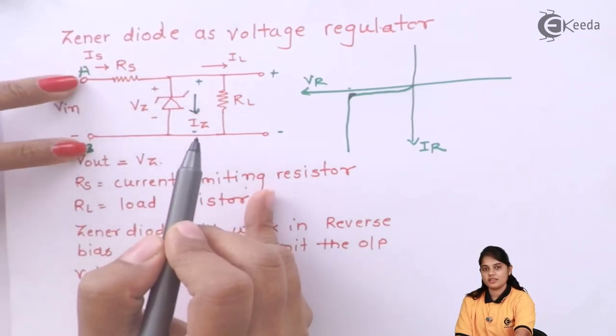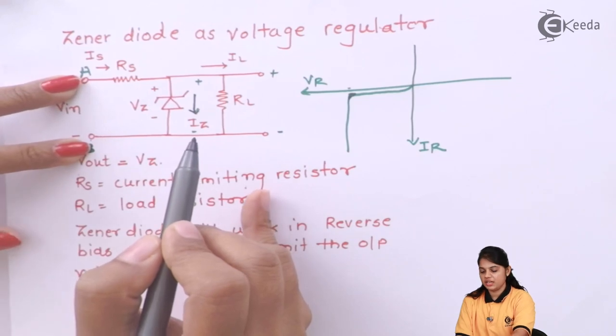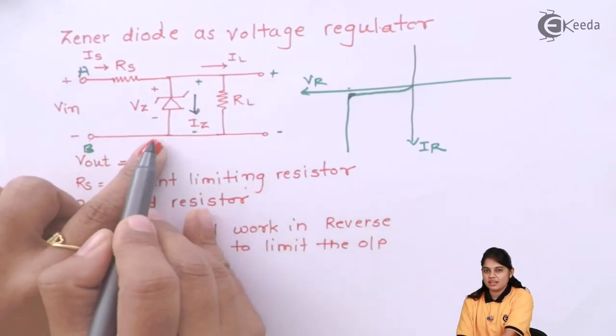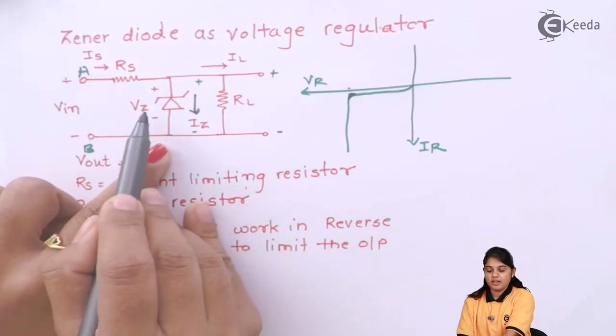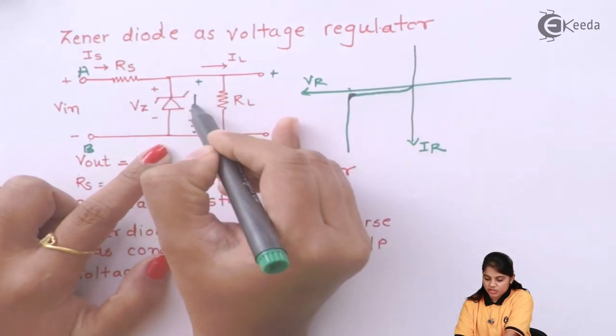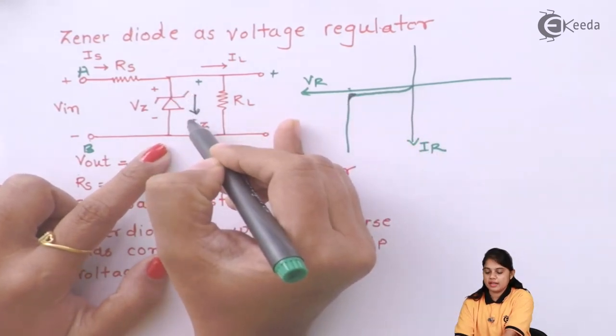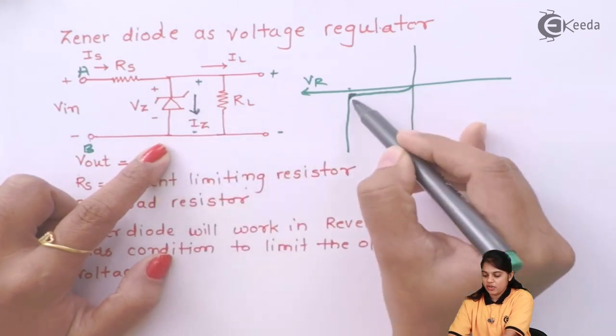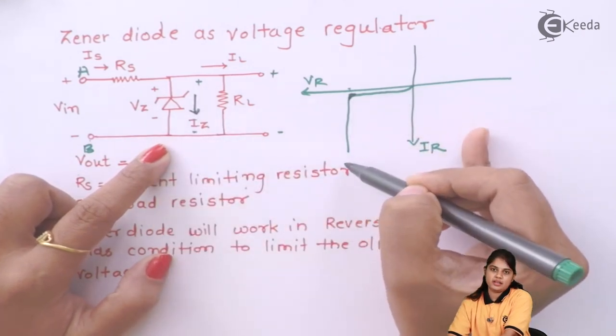As you go on increasing voltage, input voltage Vin, there will be change, there will be increase in Zener voltage. But at one point, voltage will remain constant and current which is flowing through the Zener diode, that is IZ, will continue to increase.